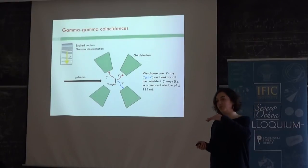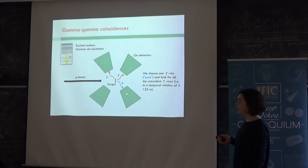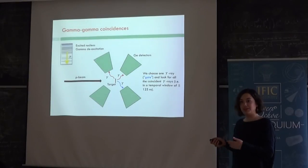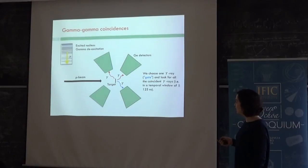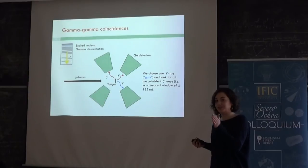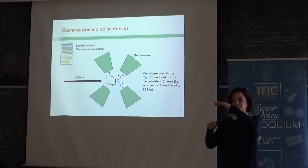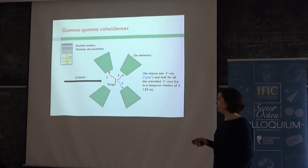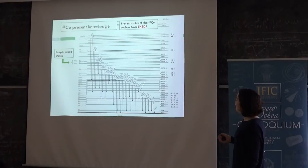What you do is you choose one gamma, for example, this in blue, and we call it gate. And we try to look for all the rest of gammas that comes at the same time. For us, for example, the same time would be around 100 nanoseconds. So you choose one gamma and then in this temporal window, you study all the rest of gammas that came at that moment. So in this way, you are able to construct the level scheme.